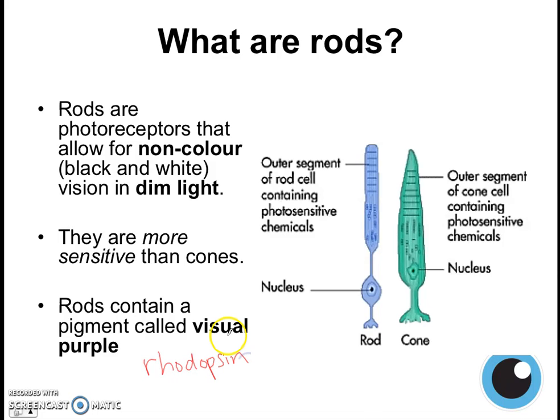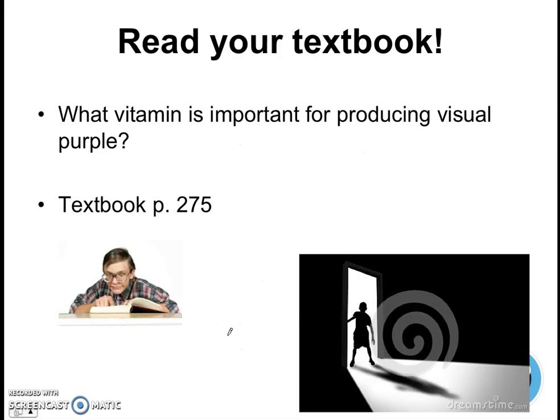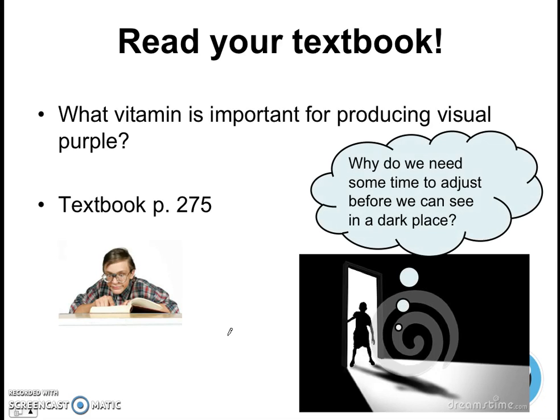The scientific name for visual purple is rhodopsin — you can go look this up if you like. For a bit of work on your own, go open your textbook to page 275. What vitamin is important for producing visual purple, which is vital for rods? Also, have you ever tried walking into a dark room after being in the sun for very long? You'll realize that you need some time to adjust your eyes before you can see in a dark place. Why is that? It has something to do with visual purple — go look in your textbook to see if you can find the answer.